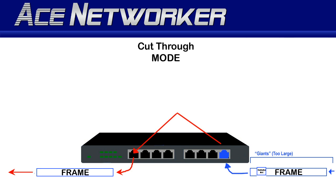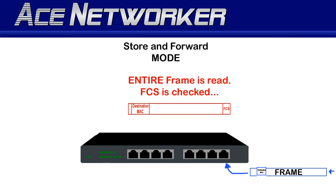Take into consideration why you might want to use cut-through mode. Typically it's used on smaller networks, not large enterprise-level networks, because of the inordinate amount of retransmissions from runts, giants, or errored frames — the switch doesn't know or care, it just forwards them. As a side note, most older switches used to default to cut-through mode out of the box, but most newer switches now default to store-and-forward mode.